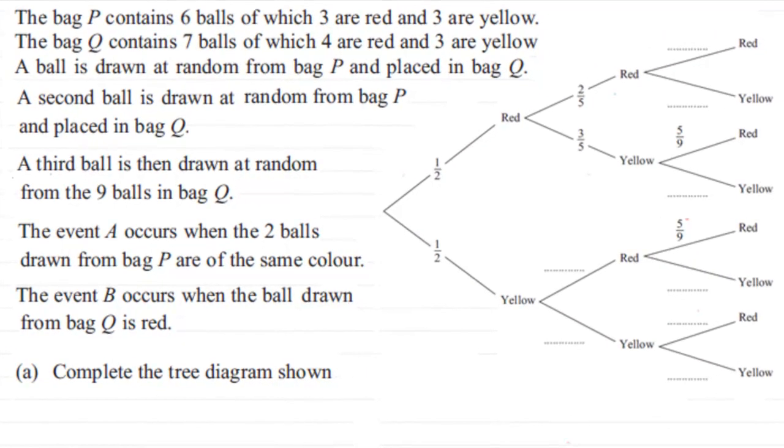Now, in this question, we've got to complete this tree diagram, where essentially we've got two bags, bag P and bag Q. The bag P contains six balls of which three are red and three are yellow. And the bag Q contains seven balls of which four are red and three are yellow. And we're told that a ball is drawn at random from bag P and placed in bag Q.